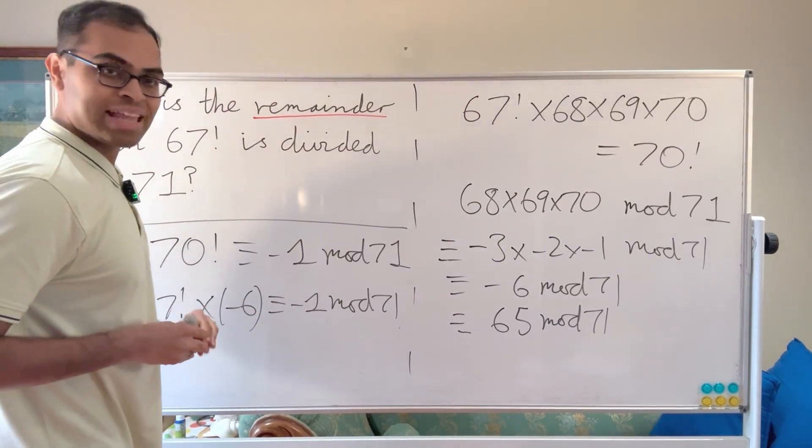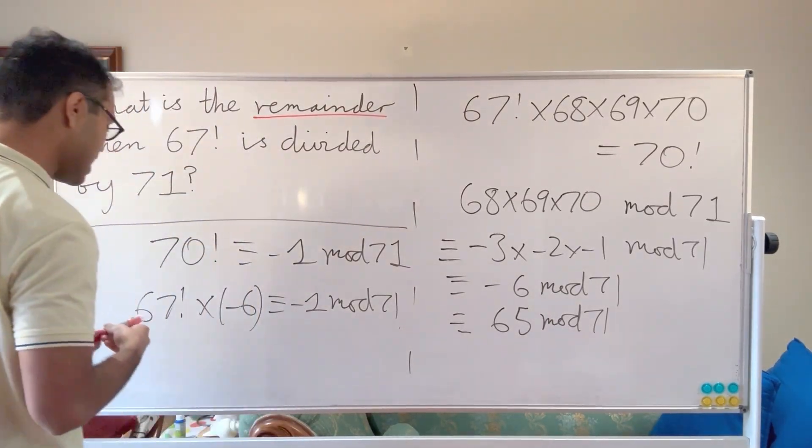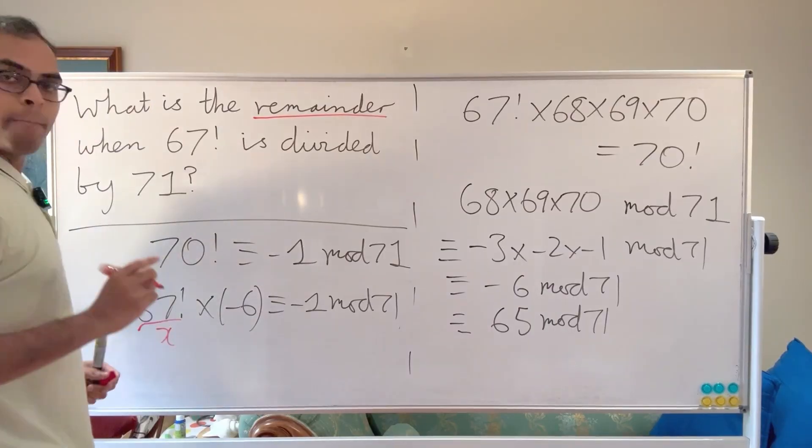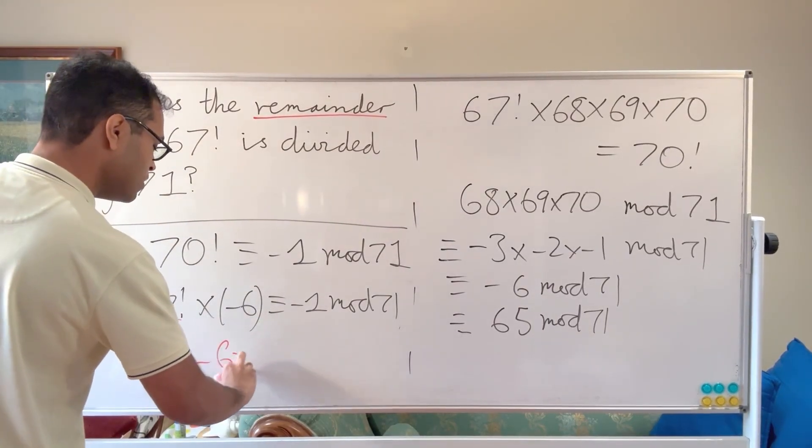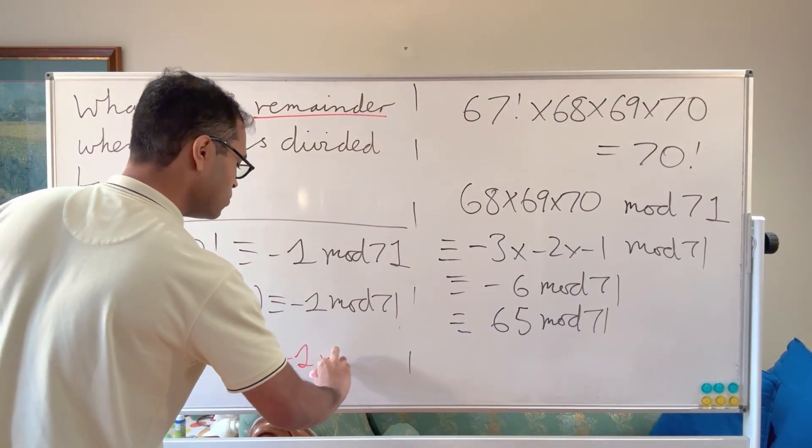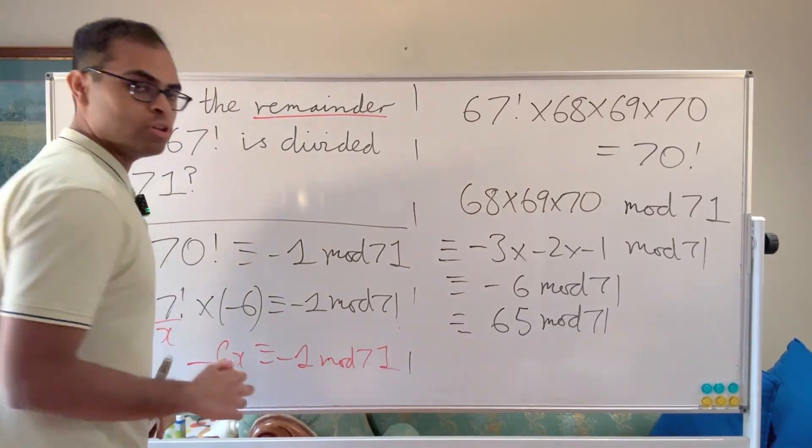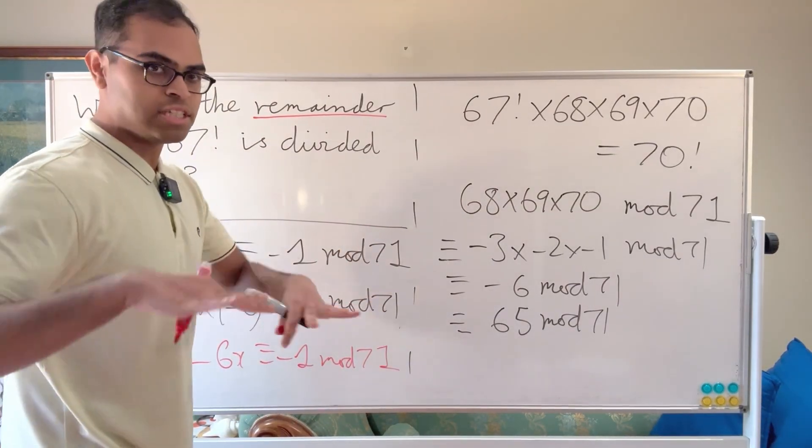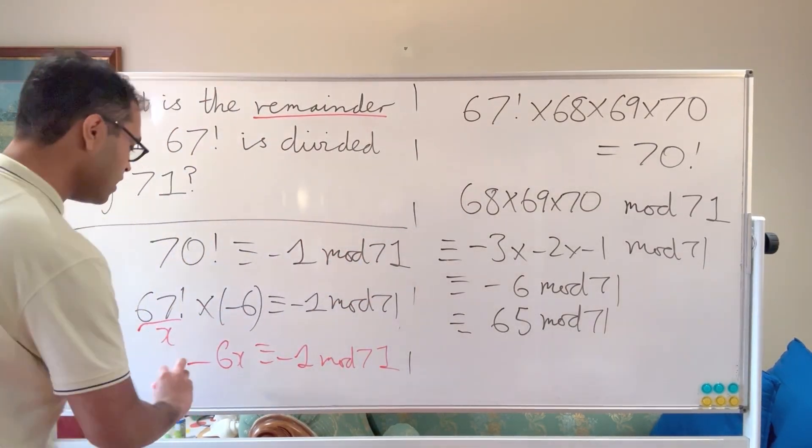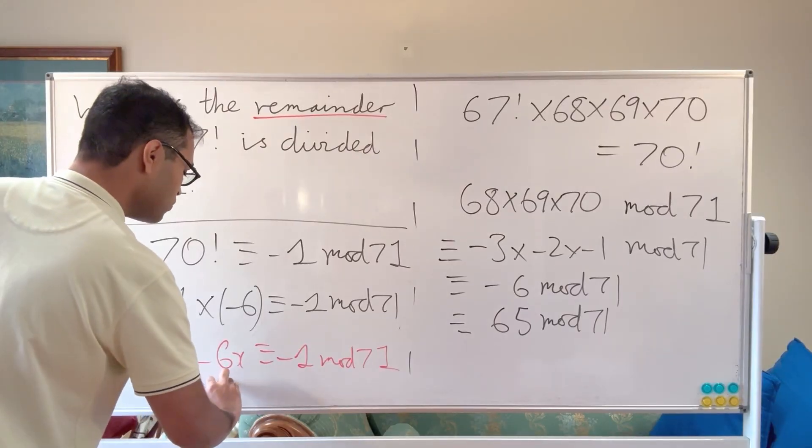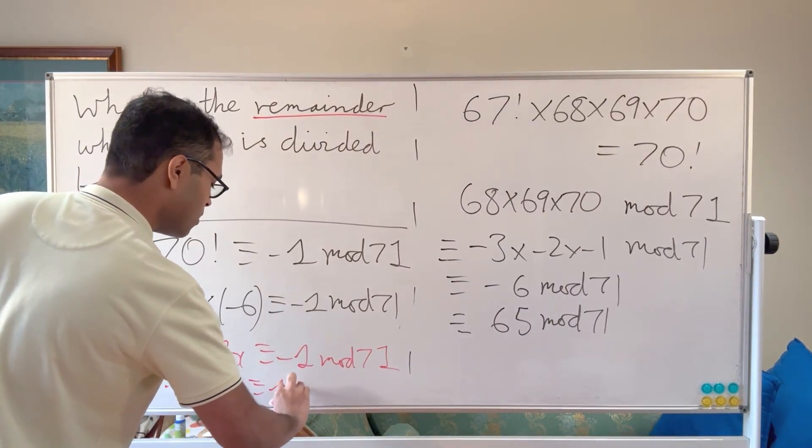Let's call 67 factorial x. So now we want to know: minus 6x is going to be congruent to minus 1 mod 71. But if we just multiply both sides by negative 1, which you can do—it's just the usual arithmetic laws—then you're going to get that 6x is congruent to 1 mod 71.